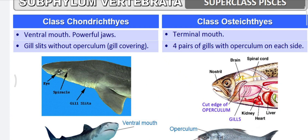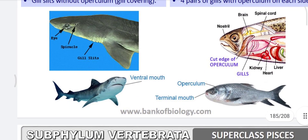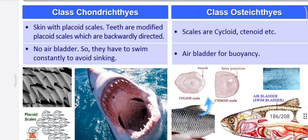In Osteichthyes, four pairs of gills are covered by an operculum. Chondrichthyes have placoid scales, and their teeth are modified placoid scales, backwardly directed and very strong. In Osteichthyes, scales are cycloid — round and smooth — and ctenoid scales are also present. There is no air bladder in Chondrichthyes, so these fishes must constantly swim to avoid sinking, but an air bladder is present in Osteichthyes for buoyancy.